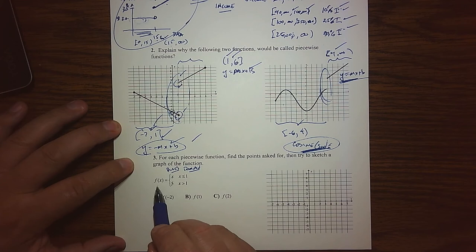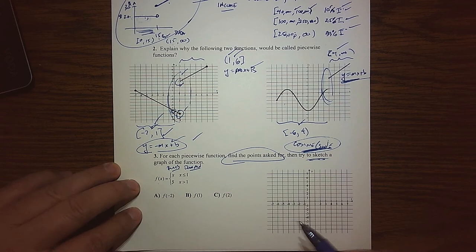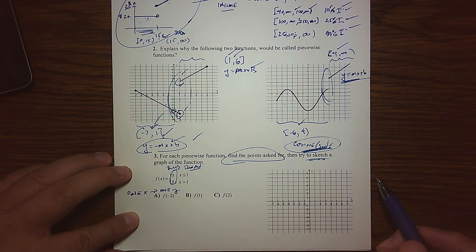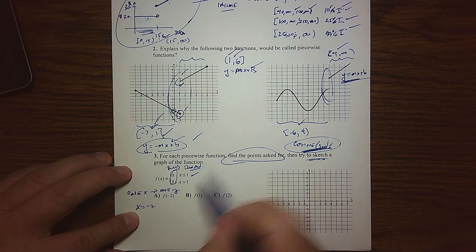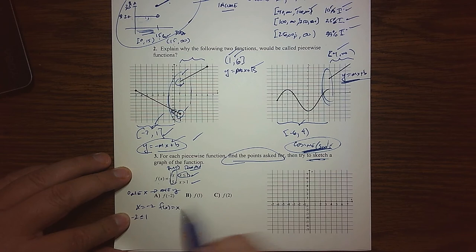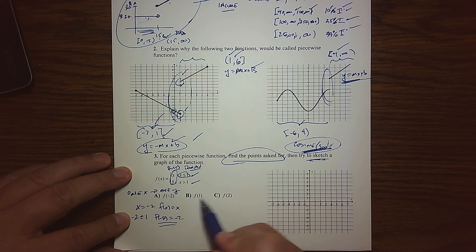Let's go ahead and look at a piecewise function and find the points asked for — just to get used to the notation before we do any sketching. When I'm asking for f of negative 2, remember one x creates one y, so I can't use both rules. I've got to figure out which rule is actually turned on. Here x is equal to negative 2. We know that negative 2 is less than or equal to 1, so it's on that part of the domain. The rule is f of x equals x, so f of negative 2 is negative 2.